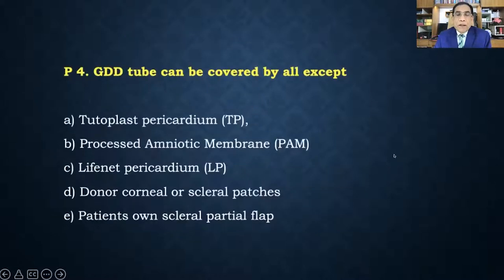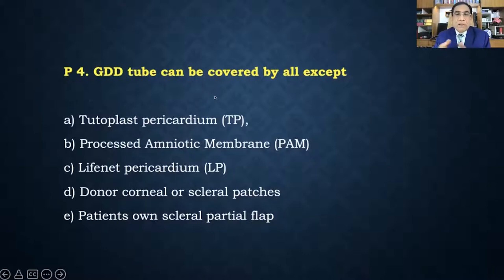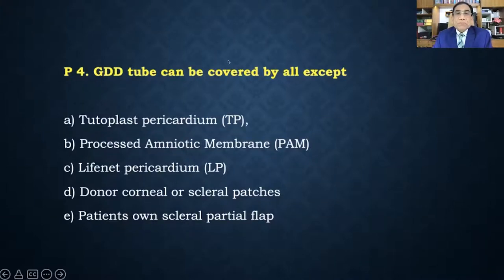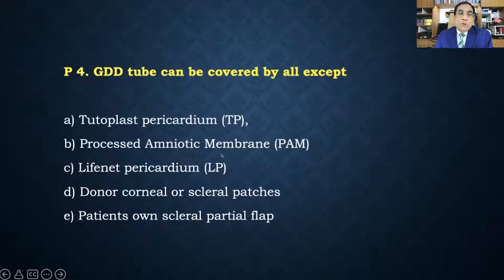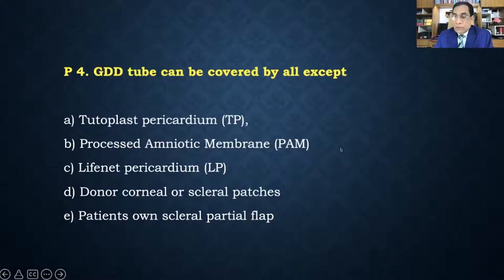Poll: should the GDD tube be covered by a donor graft or the patient's own tissue? About 40% answered correctly. While some surgeons use amniotic membrane, studies show it is not useful long-term due to high tube exposure risk. Mostly, we use pericardium or corneoscleral patch grafts.